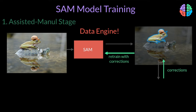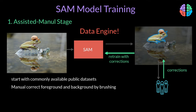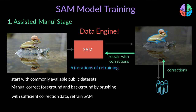In the first assisted manual stage, they trained the SAM model with commonly available public datasets for segmentation and let this model interact with manual annotators who used a browser to correct the output masks by erasing and brushing the canvas. After gathering sufficient data, they retrained the SAM model with this new data, and this cycle of periodic retraining was continued six times. At some point during iteration, the encoder network size was also increased from ViT-B to a larger ViT-H model. This stage resulted in 120,000 images annotated with 4.3 million masks, with output masks per image averaging 44 by the end.